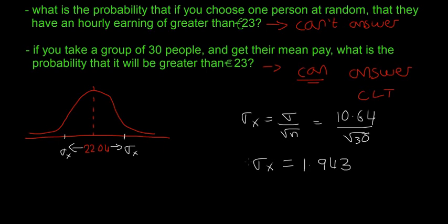Now we have a normal distribution with a sample mean and a standard deviation. We can start using our z-scores and normal distribution equations.